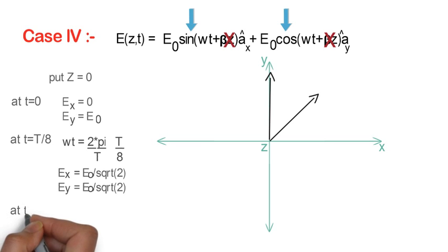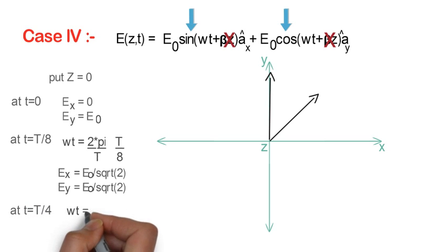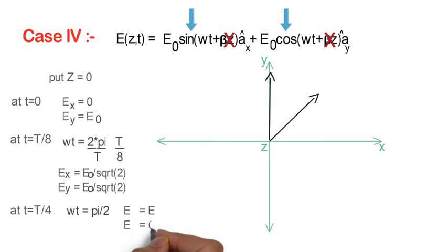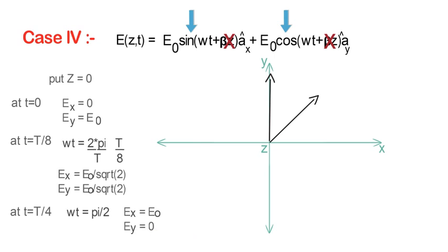Similarly, at t = T/4, ωt will become π/2. So here sine term will become maximum and the cosine term will have 0 value. So Ex will be equal to E0 and Ey will be equal to 0. And we will get the resultant as E0 in positive x direction.